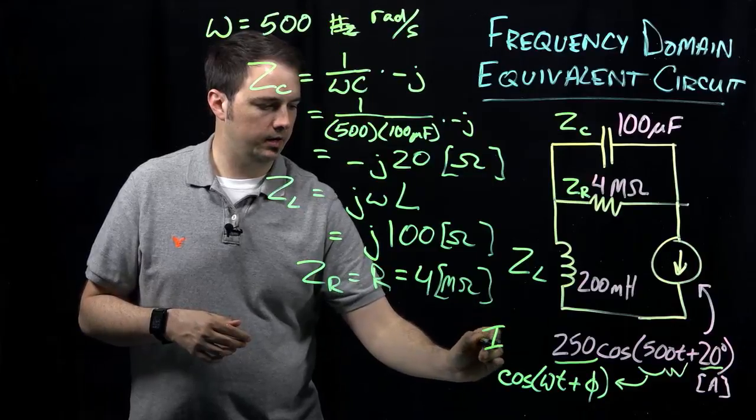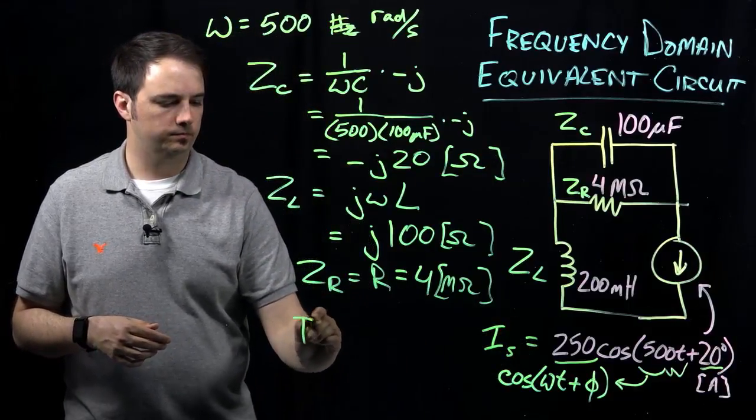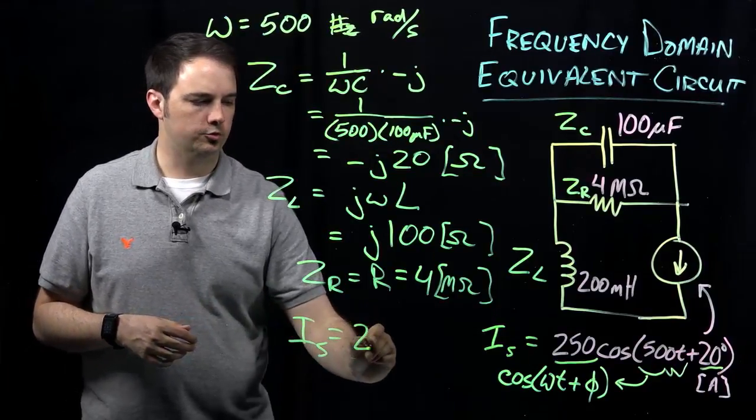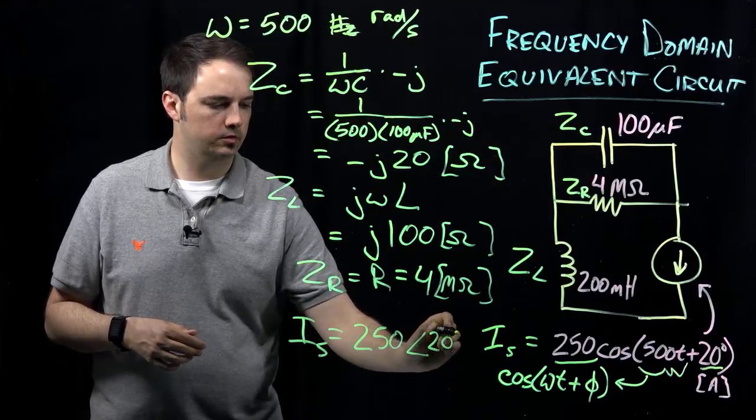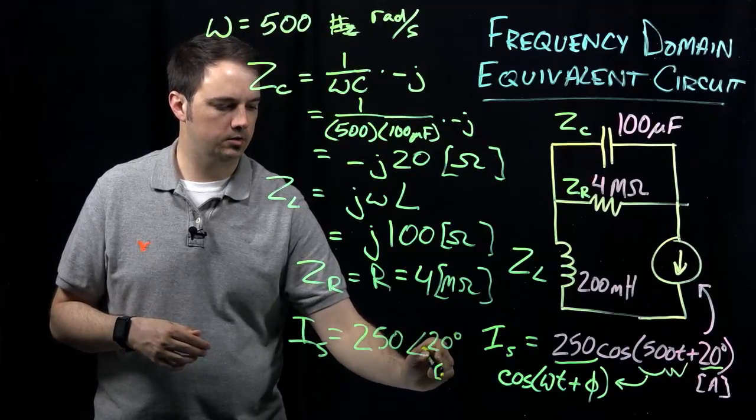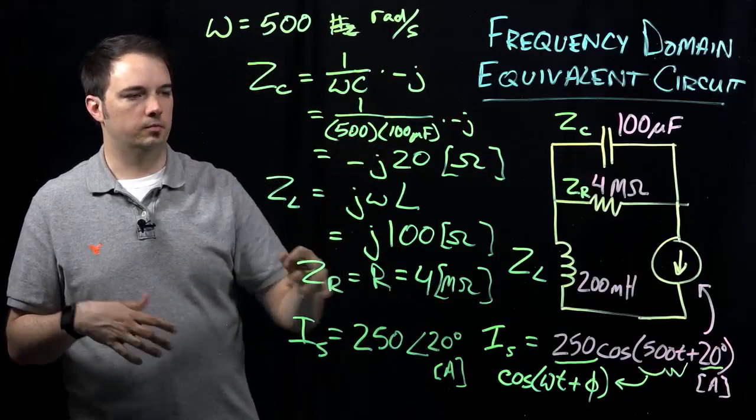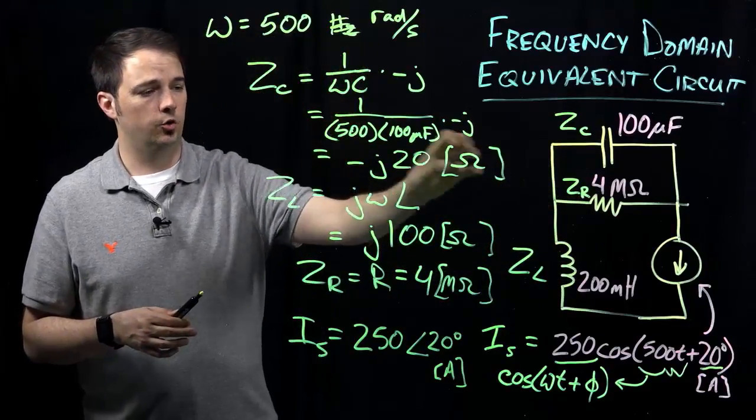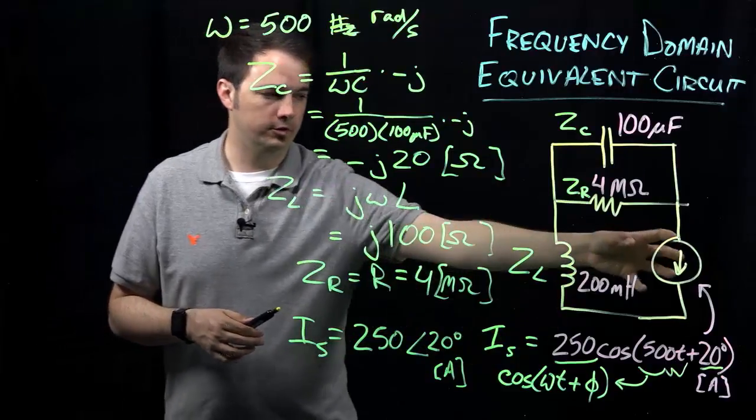So in this case, the phasor form of what we have here indicated by the current, let me call this IS, let's say, it's equal to that. Well, in the frequency domain, IS would be given in its phasor form, which would just be 250 at an angle of 20 degrees. I'm still in amps. So now with these four quantities, I could basically just redraw the exact same circuit, but now I can show the impedances of each of these terms in the phasor form of the source.